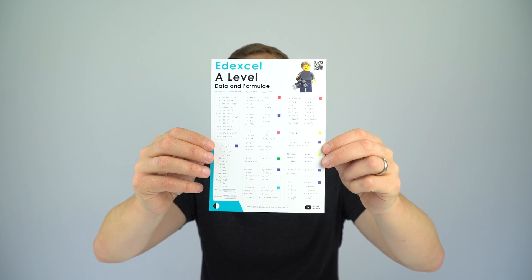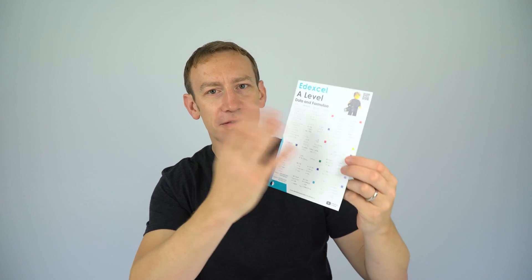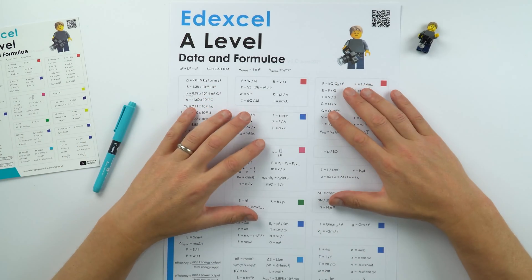Now, this is all of the A-level equations you need for Edexcel physics. This is an A5 version. You can also print out an A4 version, or even enlarge it to this version, which is an A3 down here.